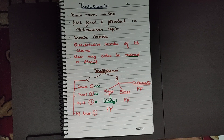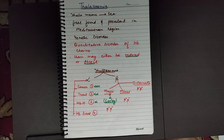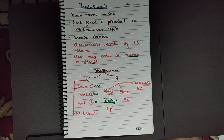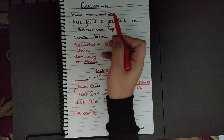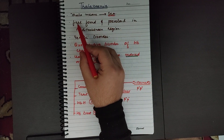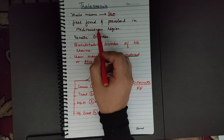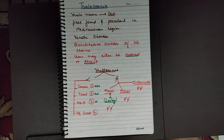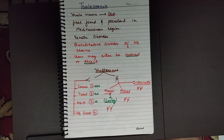From an exam point of view, this topic has been recently added in your NCERT, so there are very high chances that questions may be asked from this topic. What is thalassemia? Basically, the word 'thala' means sea. It is called thalassemia because this disease was first found and is more prevalent around the Mediterranean region or Mediterranean Sea.